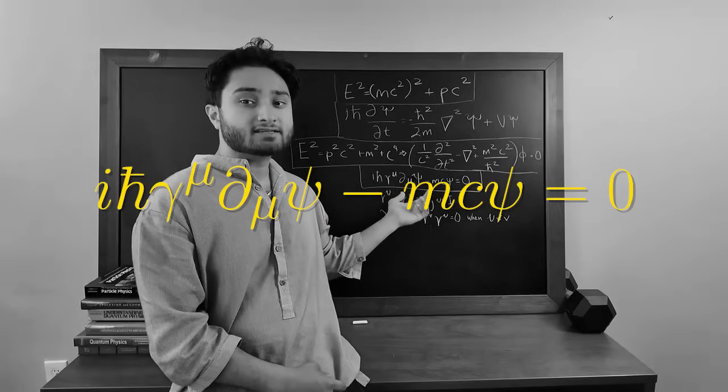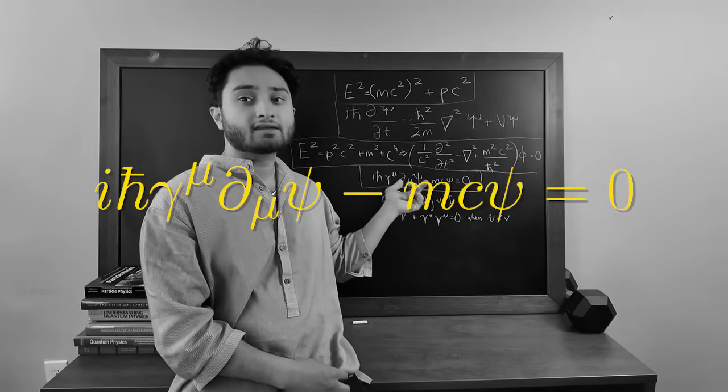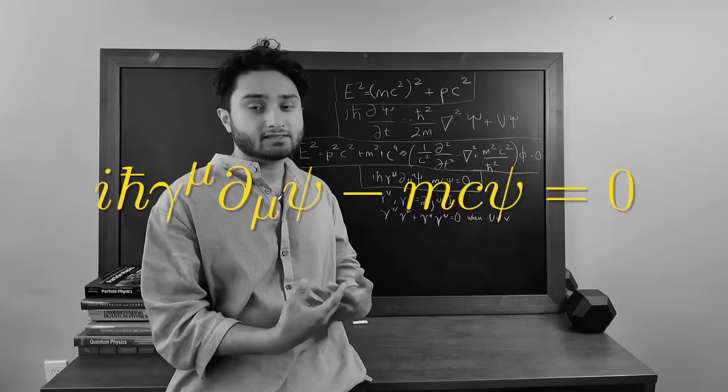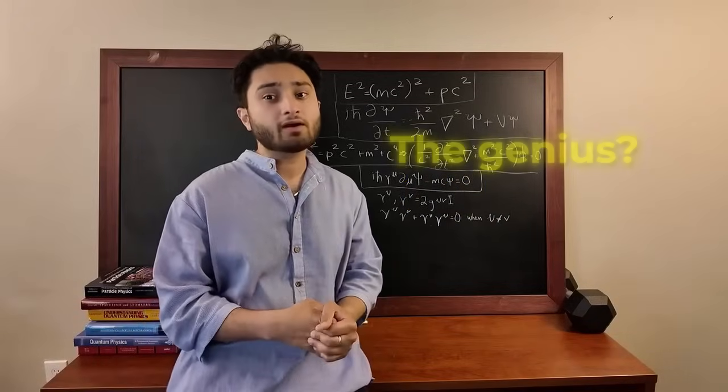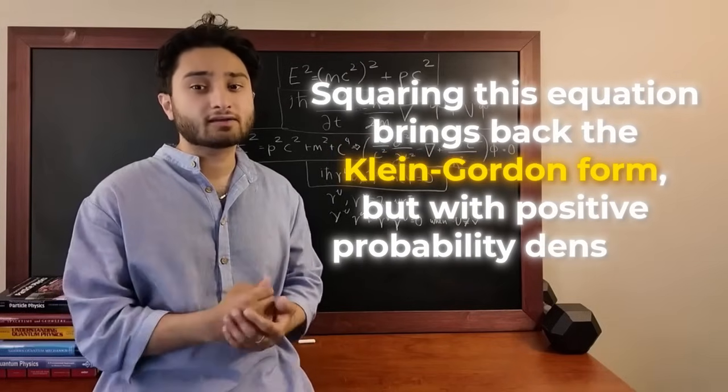So here psi is a spinor, which is a four-component object, and gamma mu are the gamma matrices. The genius? Squaring this equation brings us back to the Klein-Gordon form, but with positive probability densities and spin included.